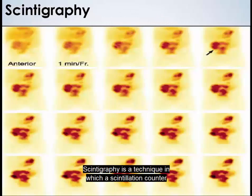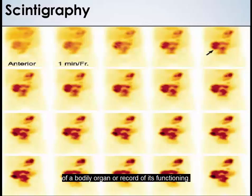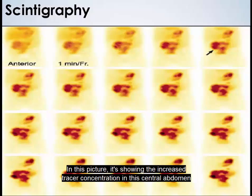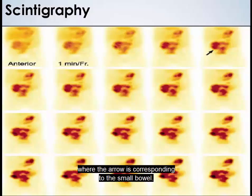Scintigraphy is a technique in which a scintillation counter or similar detector is used with a radioactive tracer to obtain an image of a bodily organ or a record of its functioning. In this picture, it's showing increased tracer concentration in the central abdomen, where the arrow is, corresponding to the small bowel.